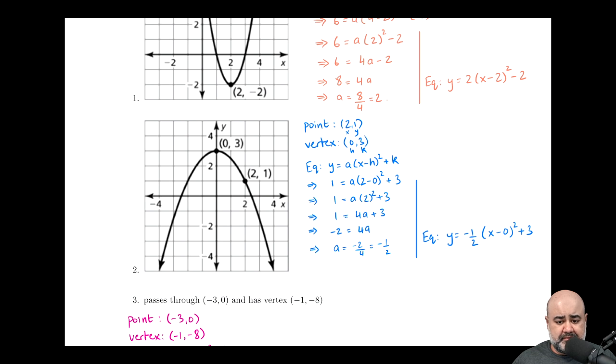Similar question. Here we are given a point two comma one, and the vertex is zero comma three. So annotated again, the point is two comma one, the vertex is zero comma three. And it's solved the exact same way. There's no difference between this solution and the previous one.